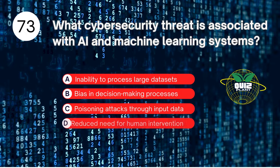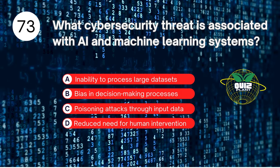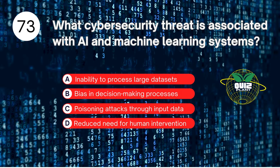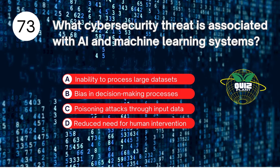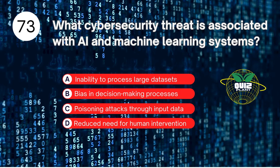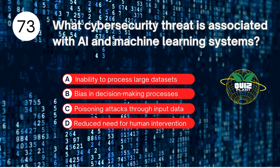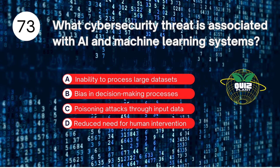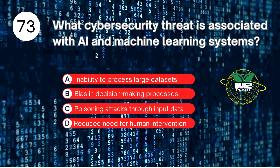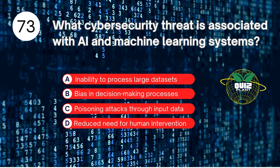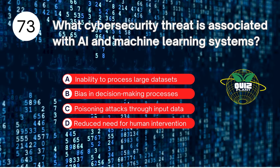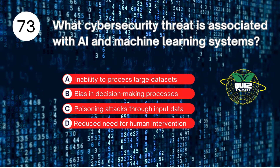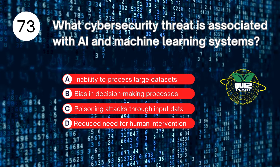Number 73. What cybersecurity threat is associated with AI and machine learning systems? A. Inability to process large data sets. B. Bias in decision-making processes. C. Poisoning attacks through input data. D. Reduced need for human intervention. The answer is C. Poisoning attacks through input data.